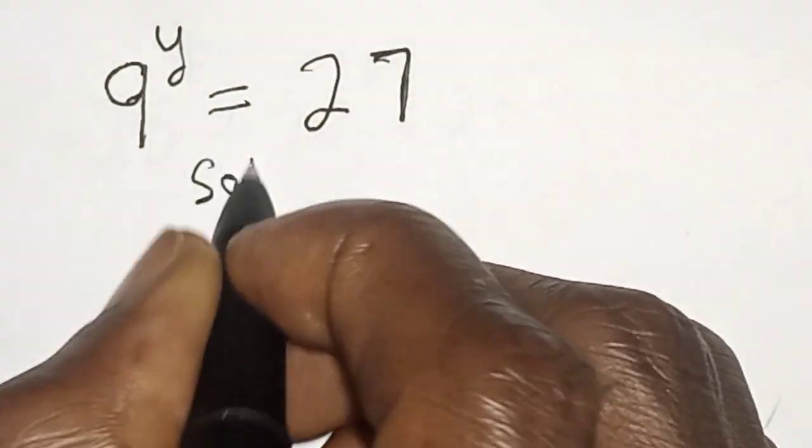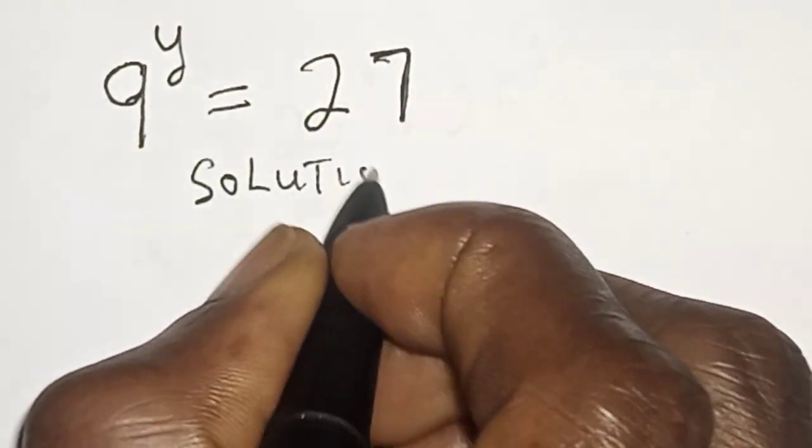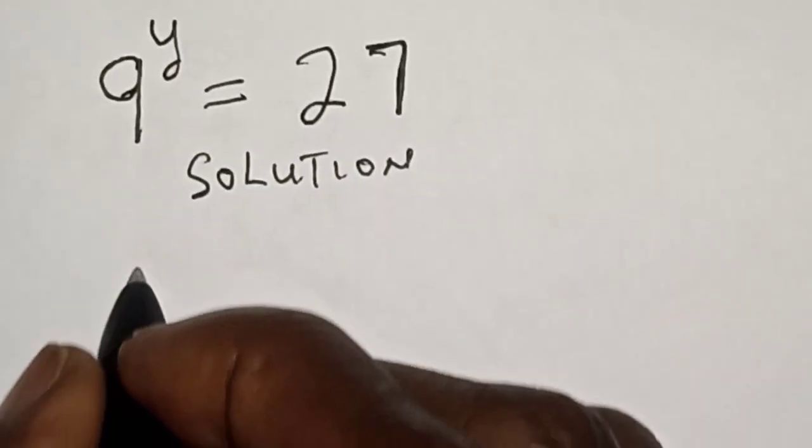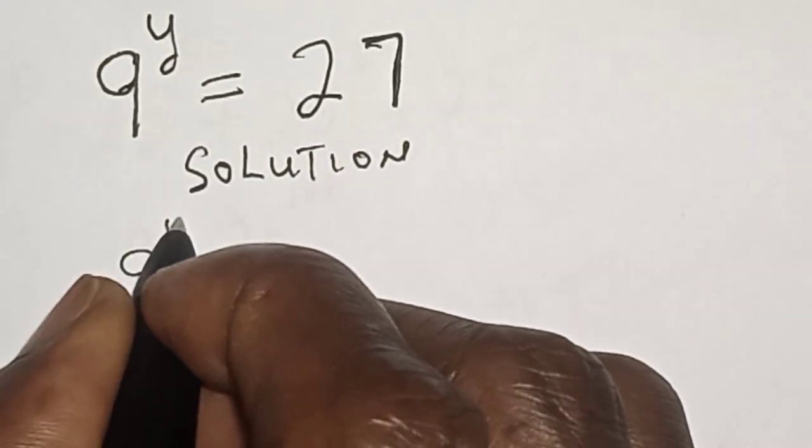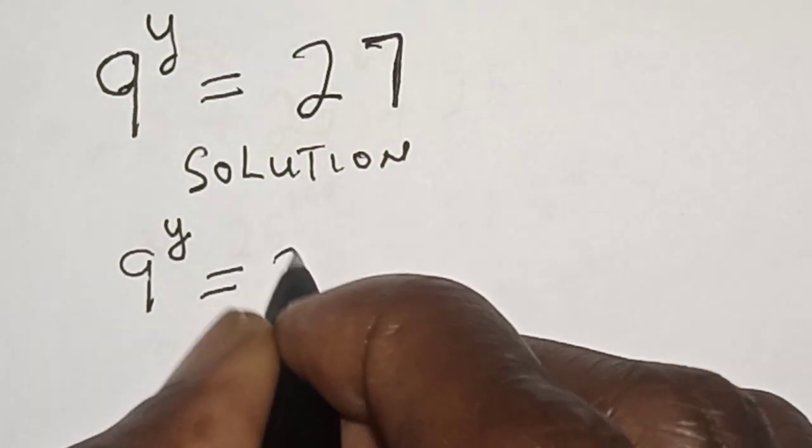Solution. 9 raised to power y is equal to 27.